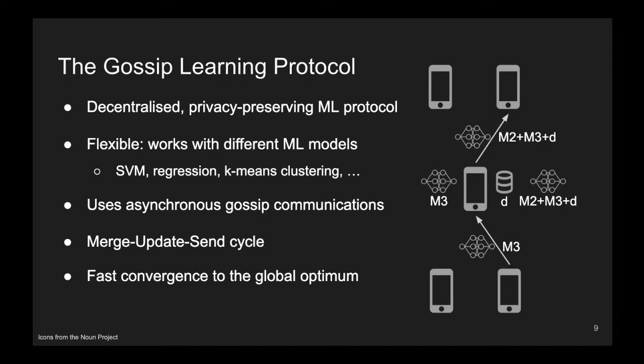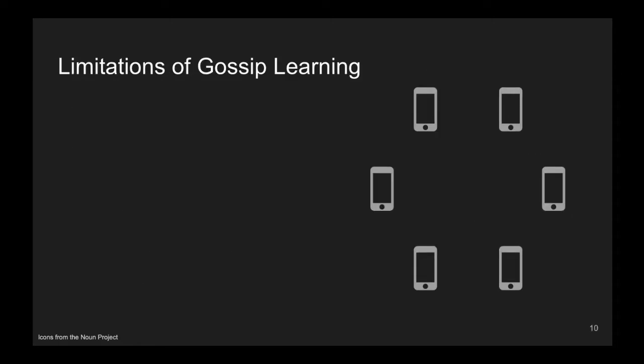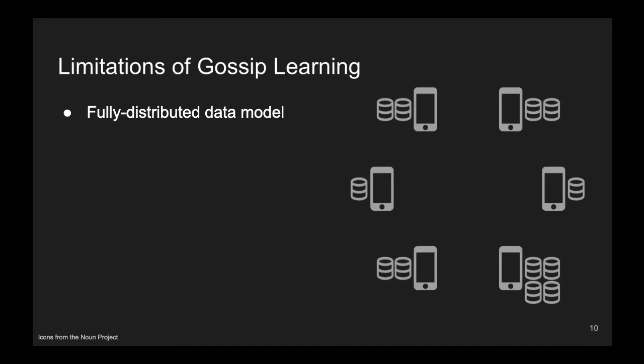Unfortunately, our research has shown that Gossip Learning presents many assumptions that limit its applicability in real-world scenarios. For example, the fully distributed data model, where every node is assumed to own a single data point. Unfortunately, in many real-world scenarios, each node might have a higher amount of information, and the amount of information might be very different in different nodes.